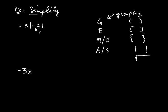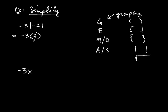Absolute value is kind of special in that even though there's nothing to do inside, you still take the absolute value of negative 2 and do that first. This becomes negative 3 multiplied by — what's the absolute value of negative 2? That's 2. I change this to parentheses to indicate it's still multiplication, but no longer absolute value because I already performed that operation. The absolute value of negative 2 is simply positive 2. So it's negative 3 times 2, which is negative 6.